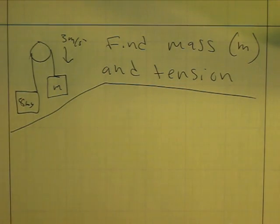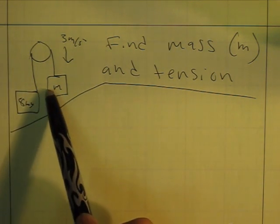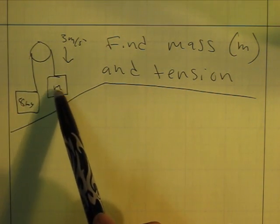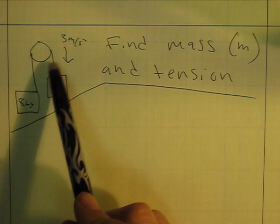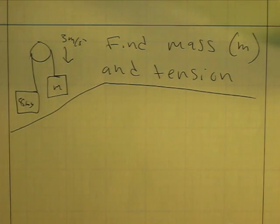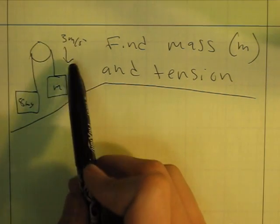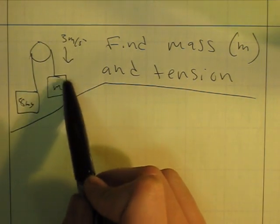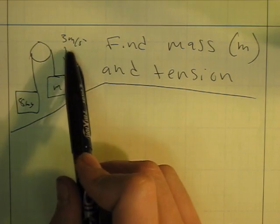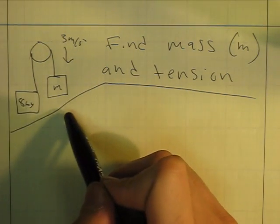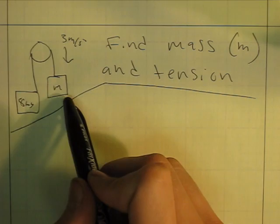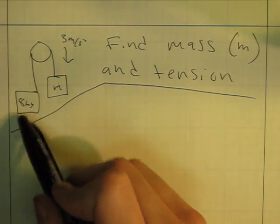Okay, here's a problem with an Atwood machine and it's asking what the weight of this mass right here is and what the tension of this string is. Given that this weight is eight kilograms and the acceleration is going down on this side at three meters per second squared, so this weight is going down. That's already a hint that this weight is going to be heavier than this one.